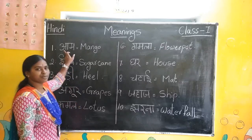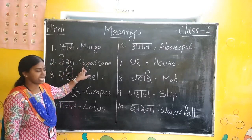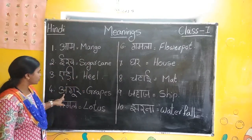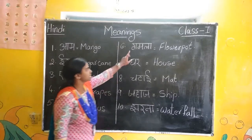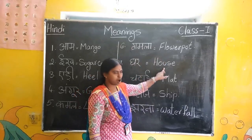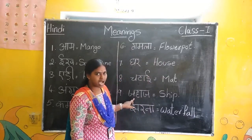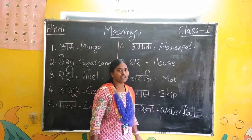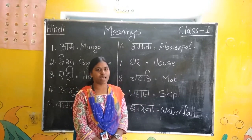Once children, repeat once: Aam — mango. Eek — sugar cane. A-D — heel. Angoor — grapes. Kamal — lotus. Gamala — flower pot. Ghar — house. Chattai — match. Jahaj — ship. Jharana — waterfall. You have to write neatly in your notebook, children. Practice well.